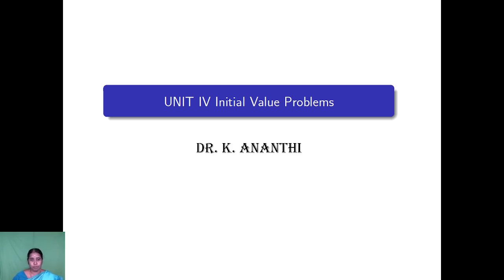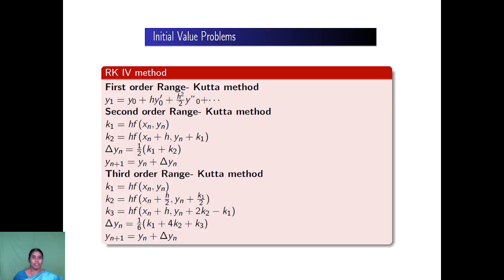In this section, I am going to define an initial value problem. In an initial value problem, I am taking the Runge-Kutta method. First, I am giving a formula for the Runge-Kutta method — how we are going to solve and apply it. The first order Runge-Kutta method: y1 is equal to y0 plus h into y0 dash plus h squared by 2 times y double dash of 0, plus etc. The second order Runge-Kutta method involves finding k1 and k2, calculating delta yn as half times k1 plus k2, where yn plus 1 is equal to yn plus delta yn.